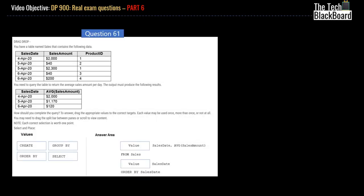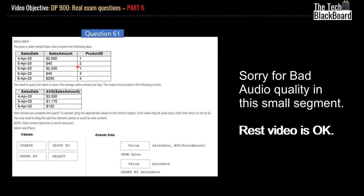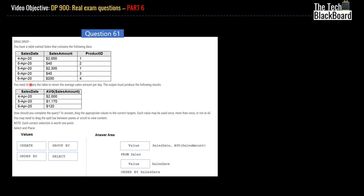In question number 61, you are given a table. The table name is Sales and then you are given some columns: sales date, sales amount, and product ID. Given with some dates, you are given some amounts and the product ID of each product. Now it says that you need to query the table to return average sales amount per day. The output must produce the following results. So what you essentially are doing is that you need to group the dates and bring out the average sales on each day.